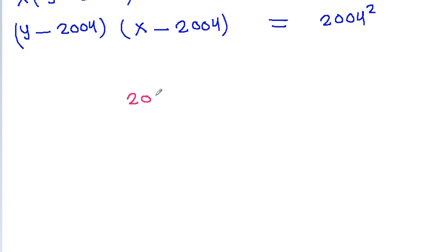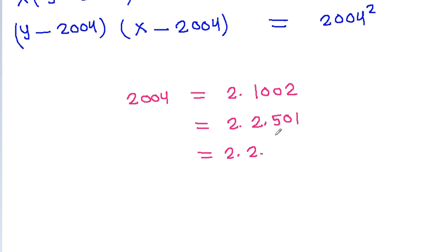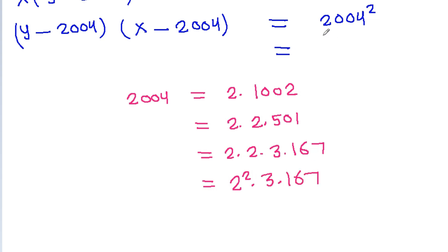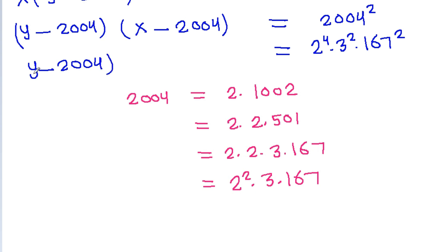And 2004 = 2 × 1002 = 2 × 2 × 501 = 2 × 2 × 3 × 167. So 2004² = 2⁴ × 3² × 167², which equals (y - 2004)(x - 2004).